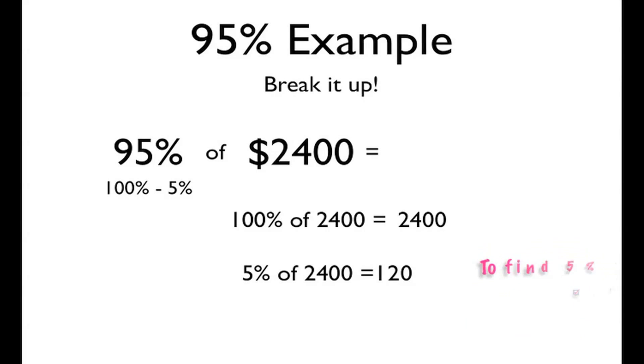Now, we broke it up, so we have to put it back together. 100% minus 5%, 2400 minus 120, to give us our final answer of 2280.